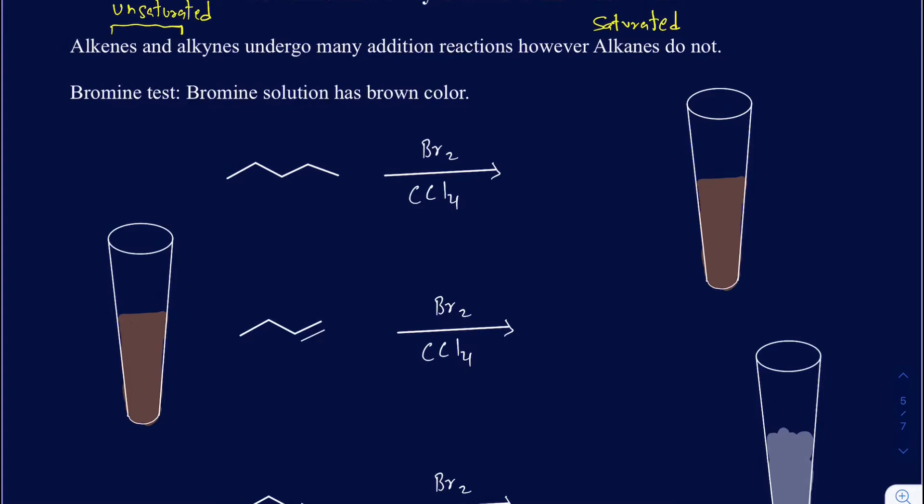Let's talk about the bromine test first. The bromine itself has a brown color, so when I have an unknown compound and I add some bromine in there, the color of the solution is going to be brown.